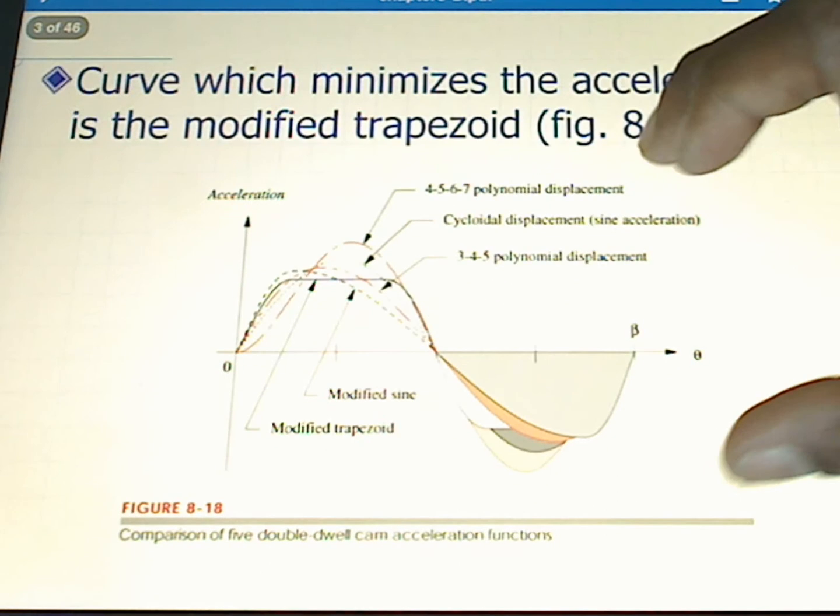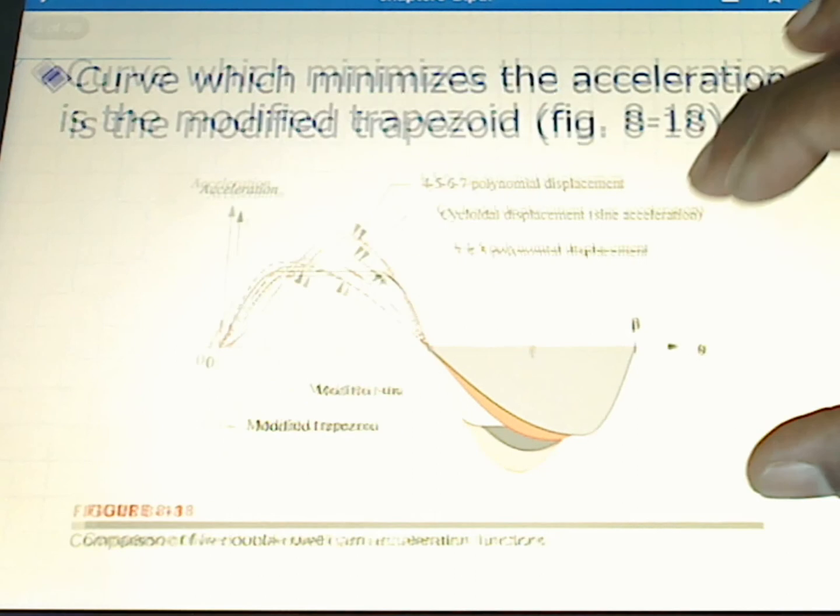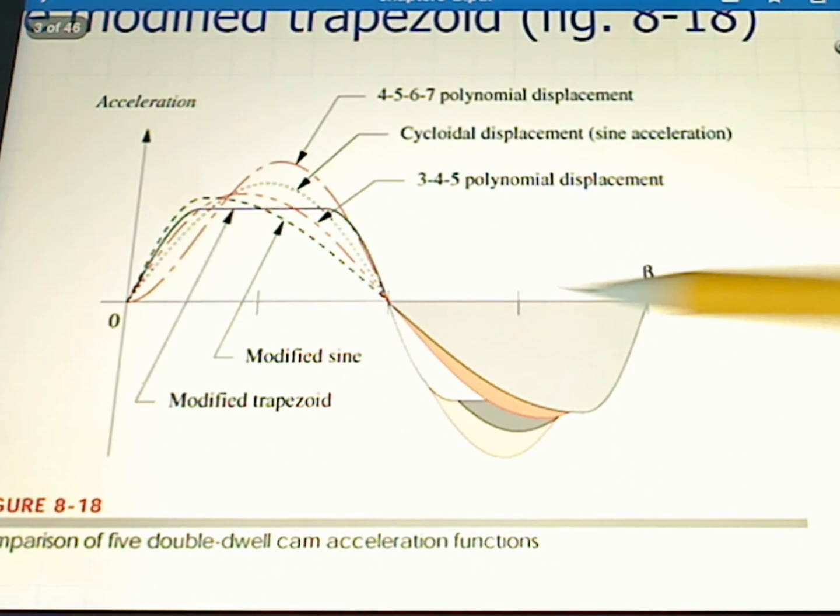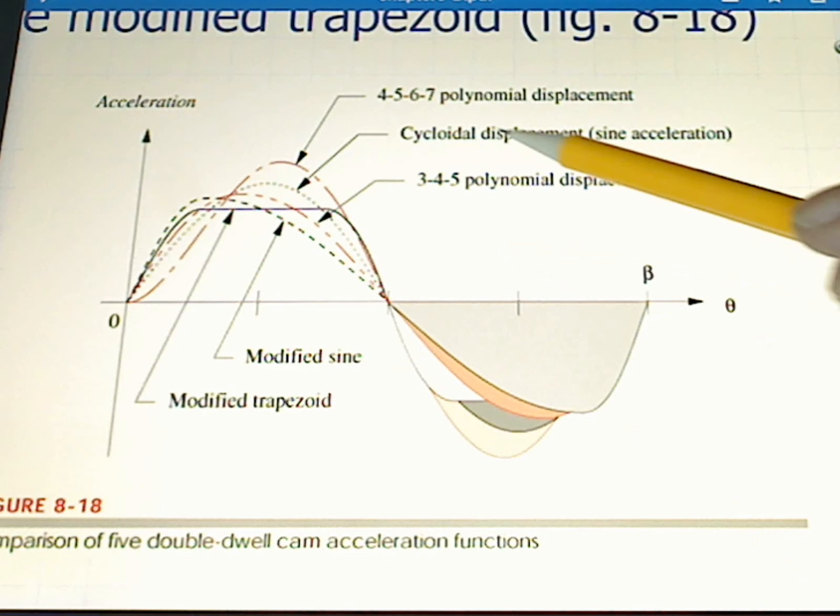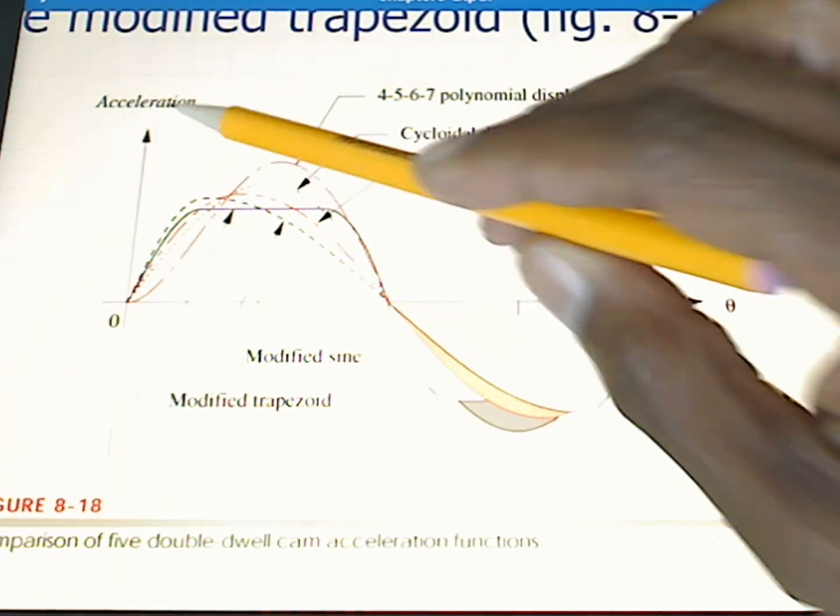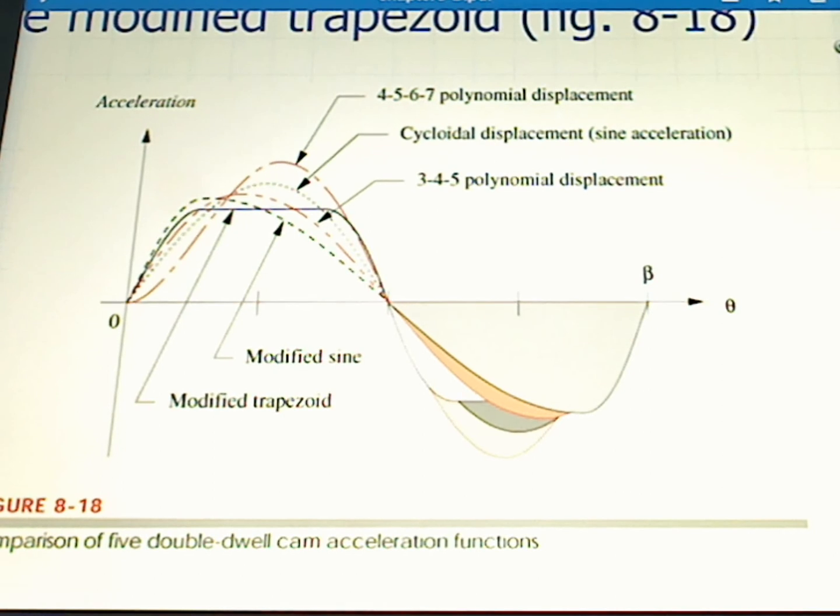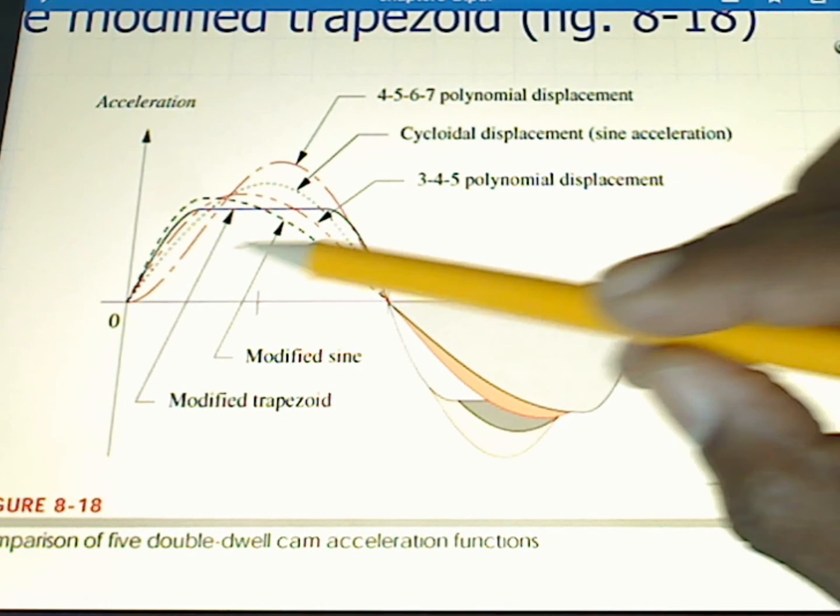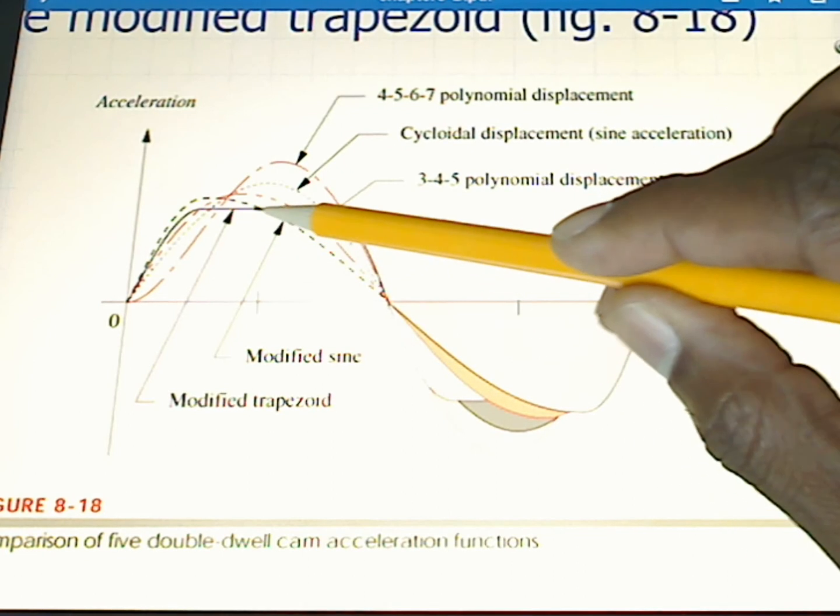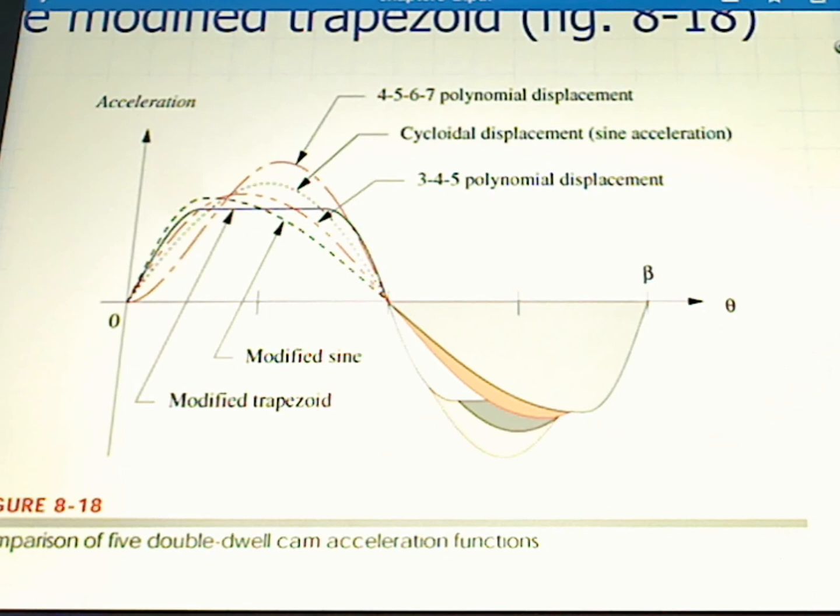Now we're asked to choose a curve or a function which minimizes the acceleration. We'll look at these accelerations - the modified trapezoid, the modified sine, and the cycloid displacement. Here we see the accelerations plotted for all of these various functions. We want the one that minimizes acceleration. We see here that the max acceleration of this black line is the lowest, and that's the modified trapezoid. That is the one that we will choose for this particular cam design.